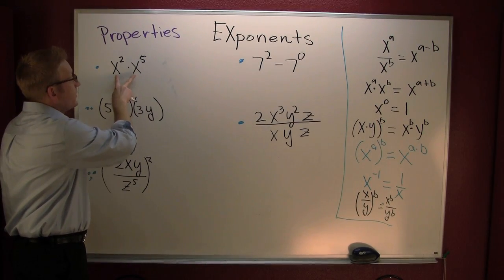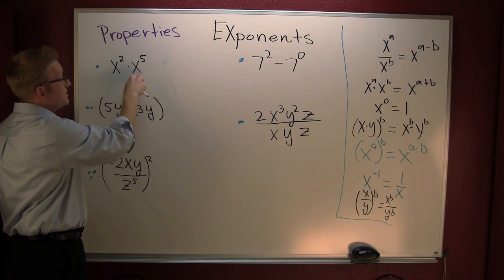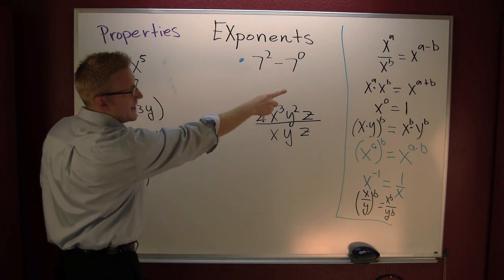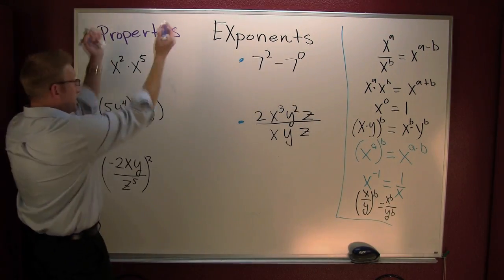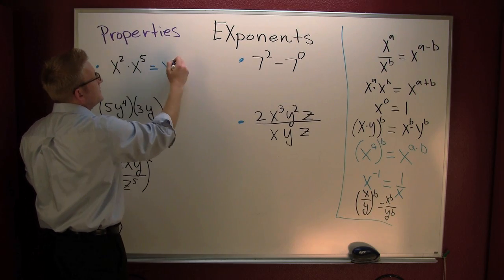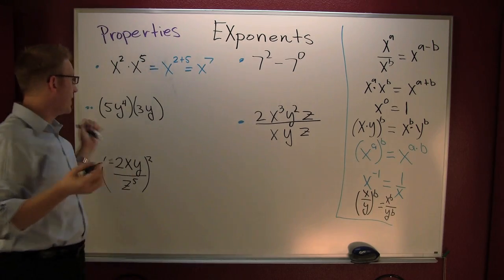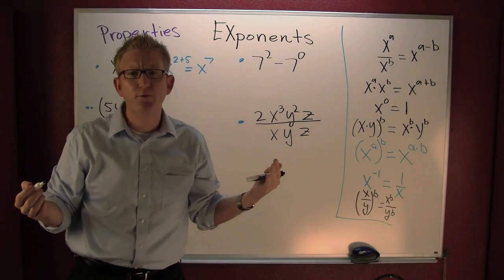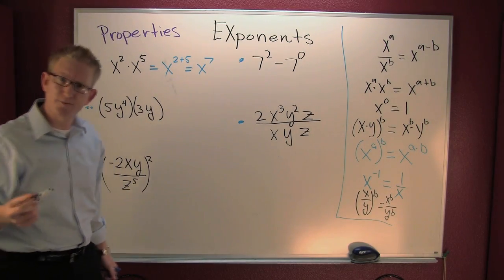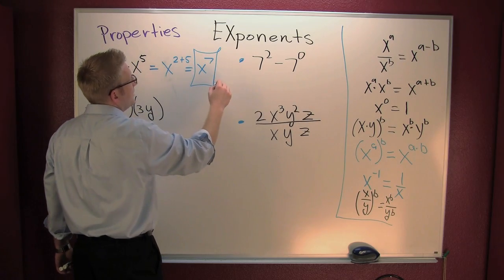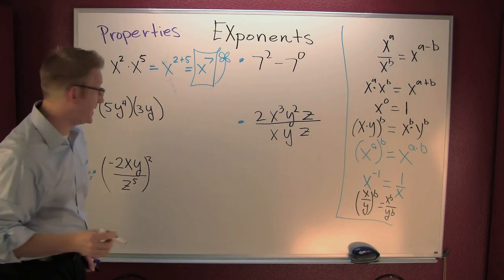Do I have the same base? Yes. Am I multiplying? Yes. You've got the same base and you're multiplying — what are you going to do to their exponents? So this is x to the two plus five, or x to the seven. We're exercising our properties. Where can we find the development of these properties? In the video for development of exponent properties. And I'm on to the next one.